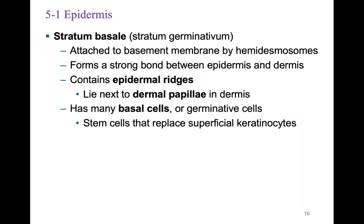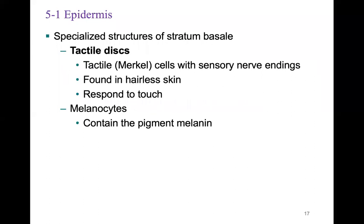The stratum basale is attached to the basement membrane by structures called hemidesmosomes, forming a strong bond between the epidermis and the dermis. It contains epidermal ridges that lie next to dermal papillae. Many basal cells, also referred to as germative cells or stem cells, replace superficial keratinocytes. Specialized structures in the stratum basale include tactile discs, which are sensory receptors for touch and pressure.